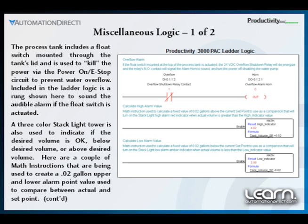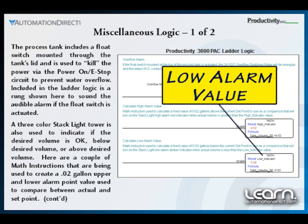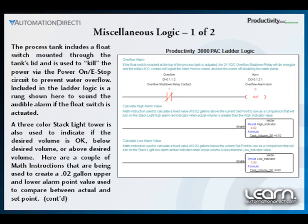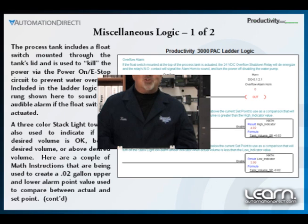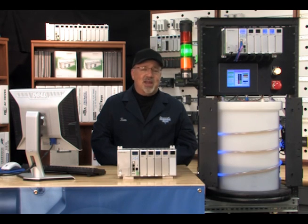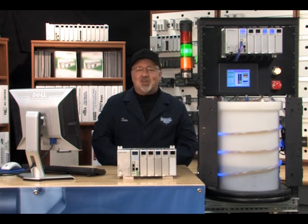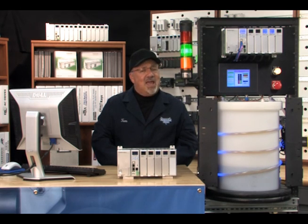Also shown on our miscellaneous logic are a couple of math instructions that are used to calculate a high alarm value and a low alarm value. A volume of 0.200 gallons is added to the current tank volume set point for the high alarm and subtracted from the set point for the low alarm. The results are used to control the three stack light indicators as seen in the next ladder logic explanation.